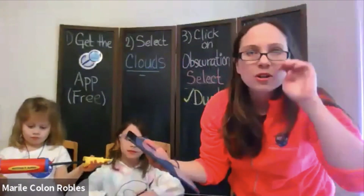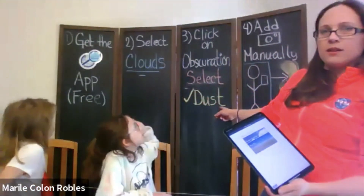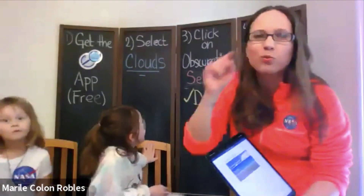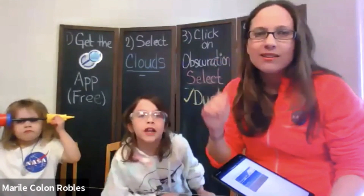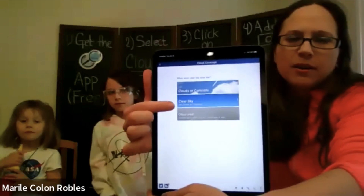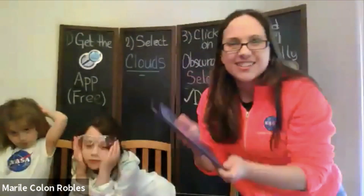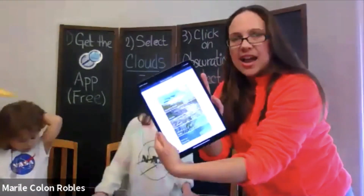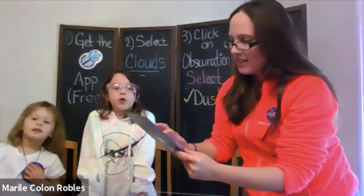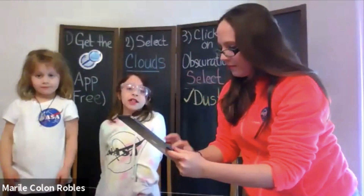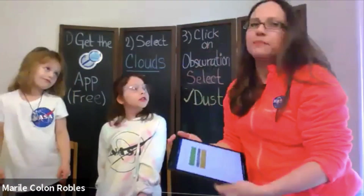It'll read your latitude and longitude — your location — which is really important for those photographs you're going to take. Step three: click on obscuration. Obscuration means that something is blocking your sky — not buildings or trees, but things like dust, storms, smoke, and haze. When you go to clouds, you'll see options: do you see clouds, is it a clear sky, or obscuration? Click there, then look for dust and click on dust. If you scroll, you'll see the next button at the bottom. It'll then ask you for some surface observations — just say yes or no to every question. It's quite simple.